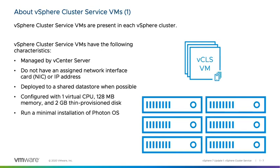A vSphere Cluster Service VM is deployed from an OVA with a minimal installed profile of Photon OS. vSphere Cluster Services manages the resources, power state, and availability of these VMs. vCLS VMs are required for maintaining the health and availability of vSphere Cluster Services. Any impact on the power state or resources of these VMs might degrade the health of vSphere Cluster Services and cause vSphere DRS to stop working in the cluster.